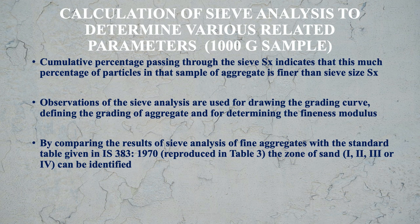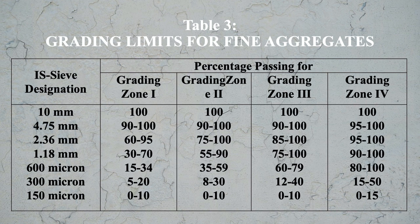Table 3 gives the grading limits for fine aggregates for different zones. For 10mm sieve, percentage passing is 100% for all zones. For 2.36mm sieve: Zone 1 is 60–95%, Zone 2 is 75–100%, Zone 3 is 85–100%, Zone 4 is 95–100%. These grading limits for percentage passing through different sieves are defined for each zone.